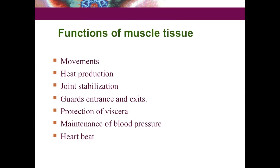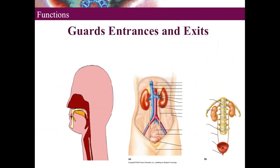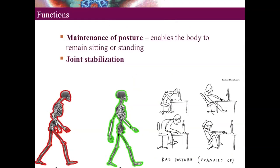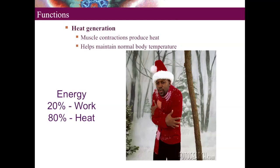Functions of muscle tissue include: giving movement to the body, guarding the entrance and exits of the body, maintenance of posture, joint stabilization, and supporting soft tissues. Heat generation is also a function — out of the total energy utilized during muscle contraction, only 20% is for work and 80% is for heat production, so muscle contraction helps maintain normal body temperature.